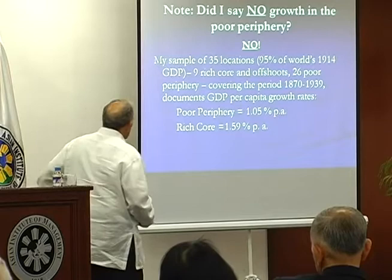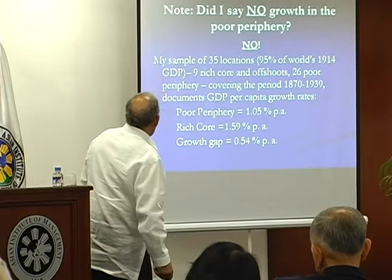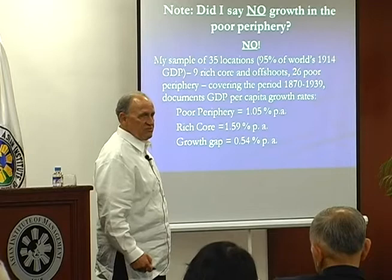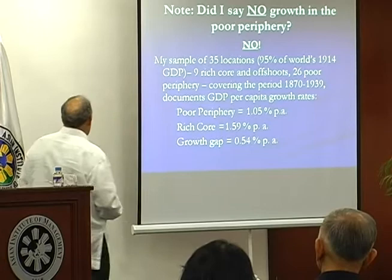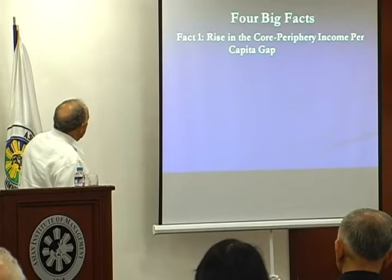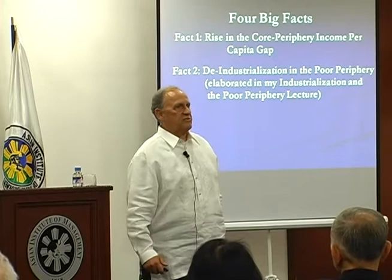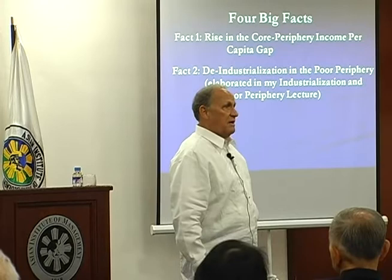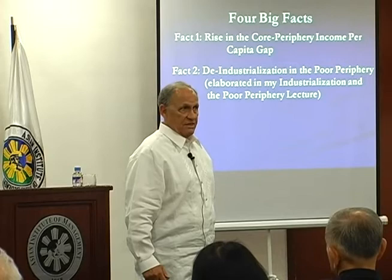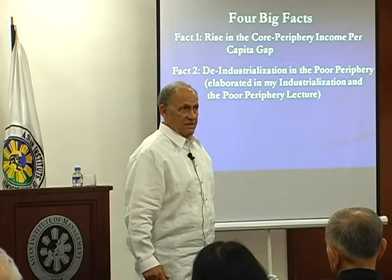We have to remember throughout that it doesn't mean the poor periphery is not growing at all — it is. That is the fact generating the growth gap, the growth gap that's generating the GDP per capita gap between rich and poor countries. That's the first fact. Now here's the second fact: the magnitude of deindustrialization that occurred in the poor periphery, including the Philippines, during this episode of global trade boom in the world economy from 1800 to 1913.